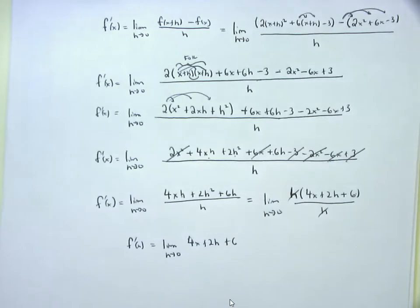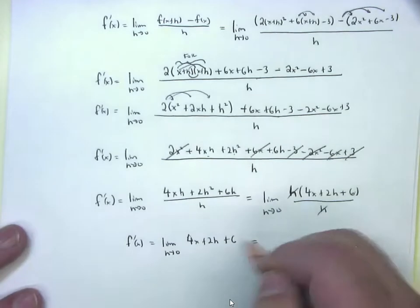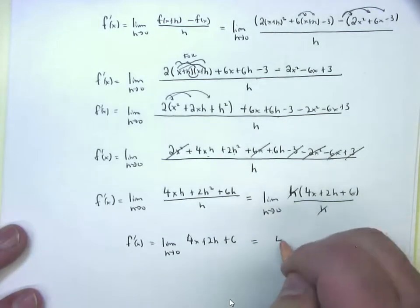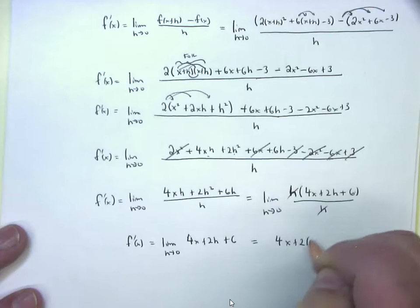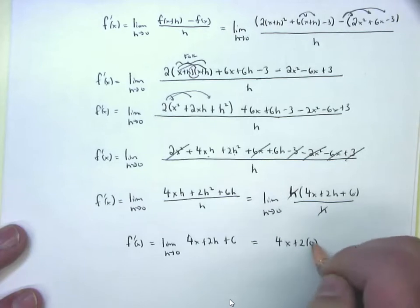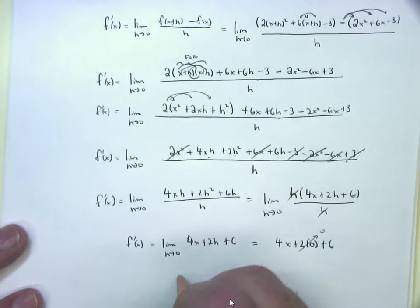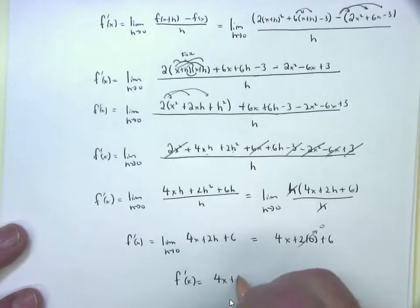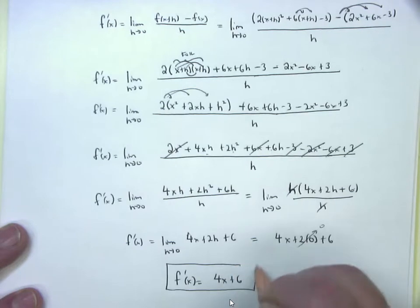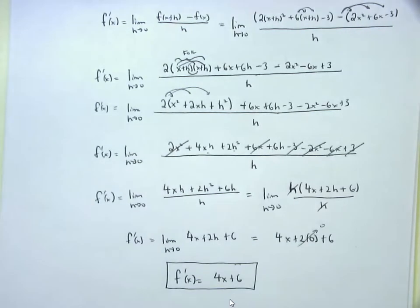After canceling the h, you have the limit as h approaches 0 of (4x + 2h + 6). Now plug in h = 0 — once you cancel, you no longer write 'limit.' That gives 4x + 2(0) + 6 = 4x + 6, exactly the same answer as the shortcut method. That's the work we want to see — it uses limit knowledge and algebra skills.